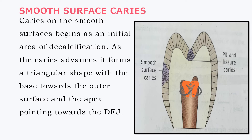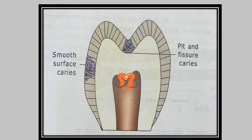On smooth surfaces, caries begins as an initial area of decalcification and then advances forward to form a triangular-shaped lesion. This triangular lesion has its base on the outer surface and apex towards the dentino-enamel junction. So we have a triangle with base upwards and apex pointing downwards towards the dentino-enamel junction — the opposite orientation to pit and fissure caries.